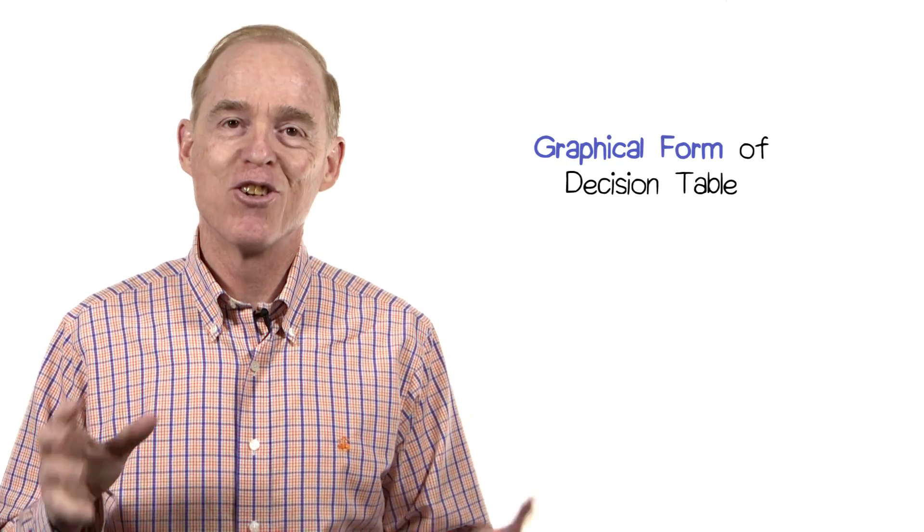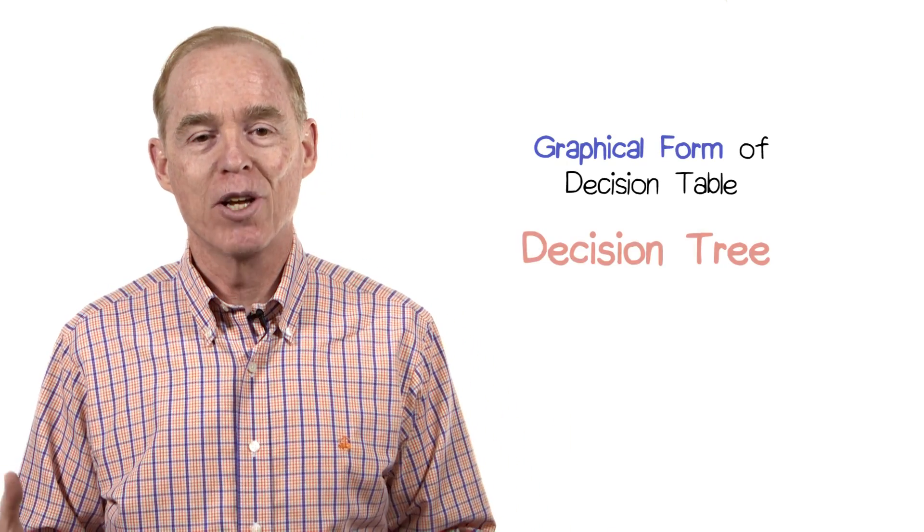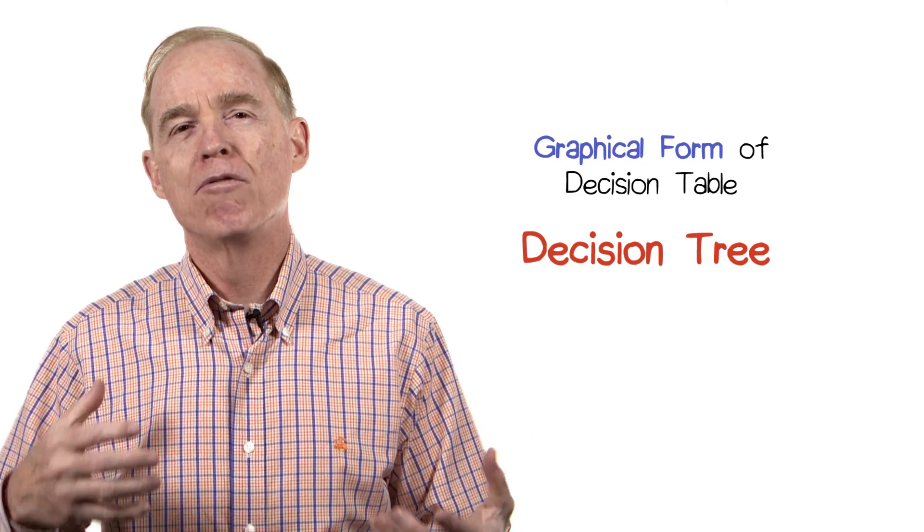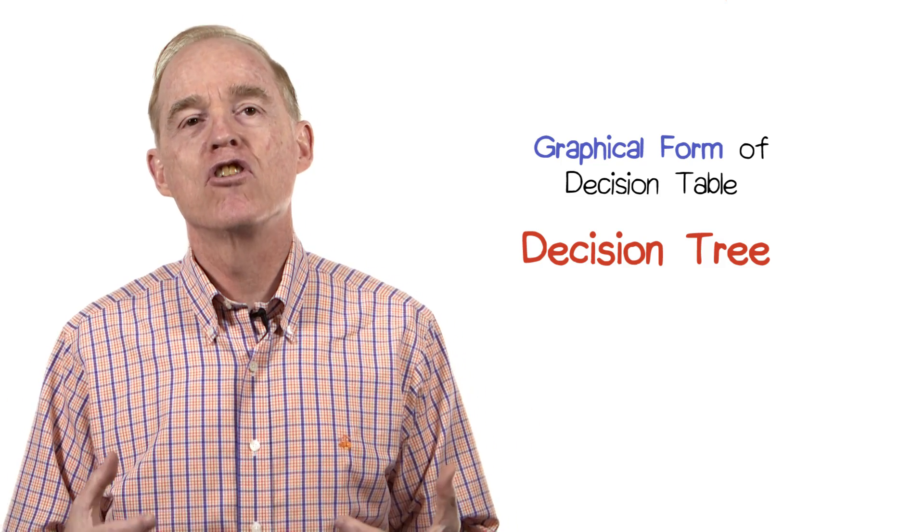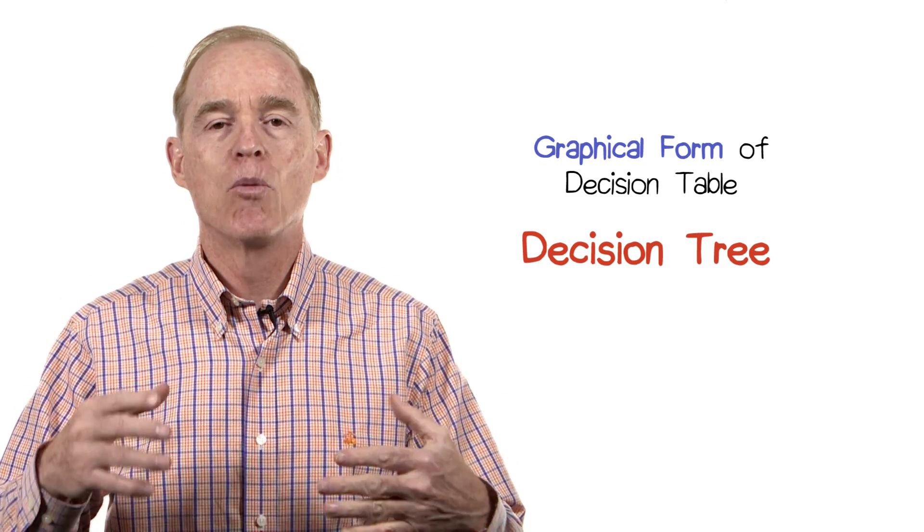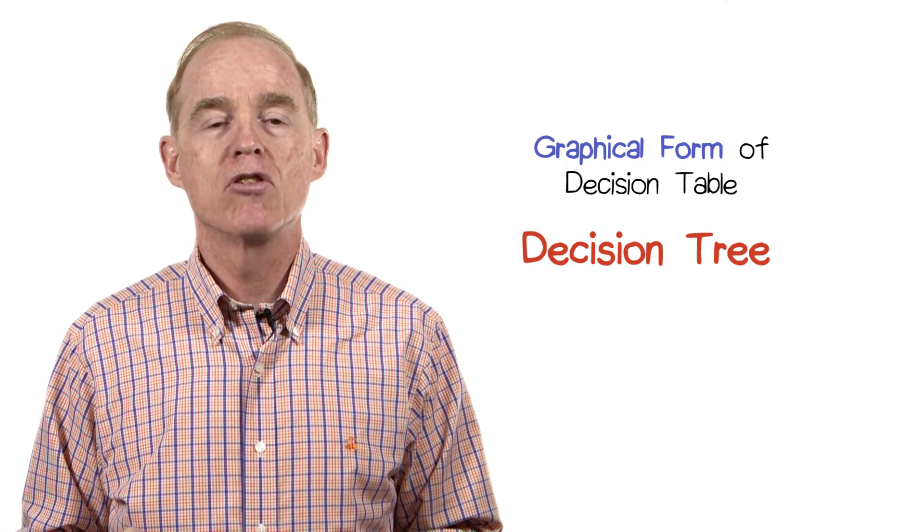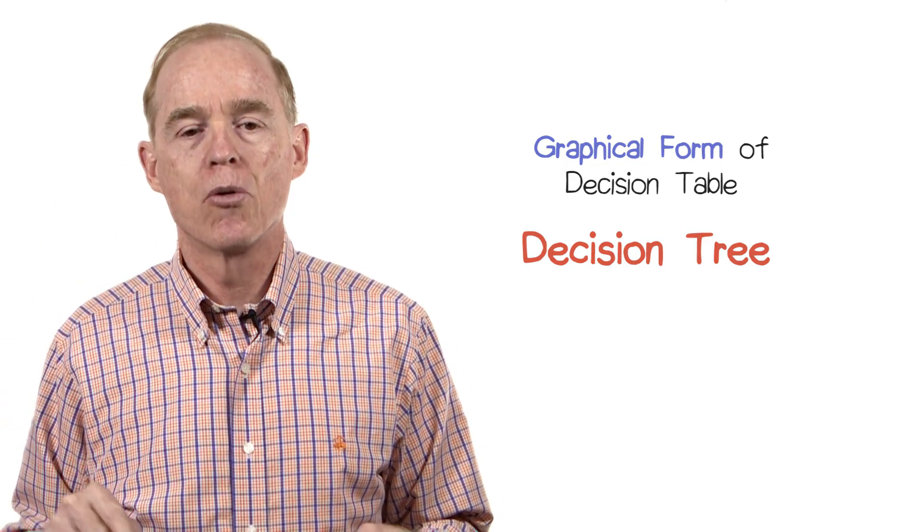A graphical version of the decision table is called a decision tree. It's a form of a flow chart in which the decisions are taken sequentially, and the result in output can be seen as a path through the tree.